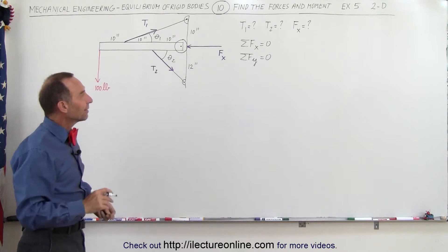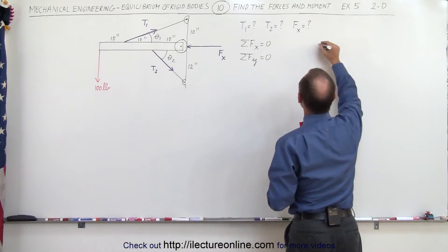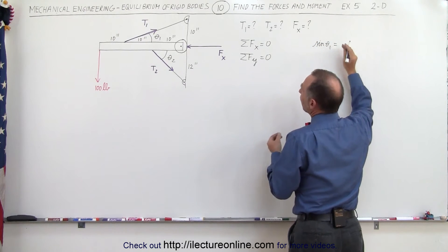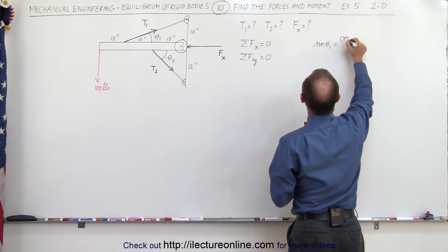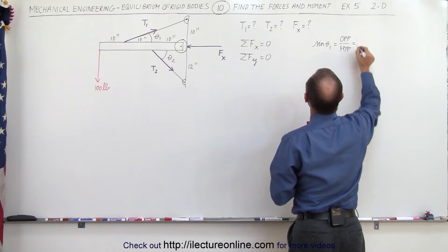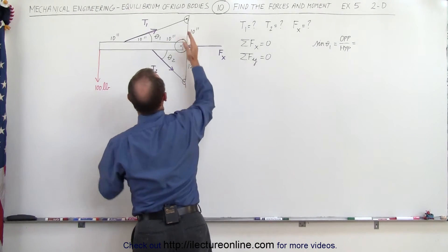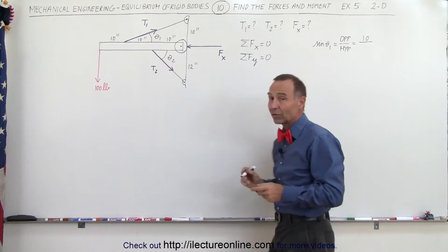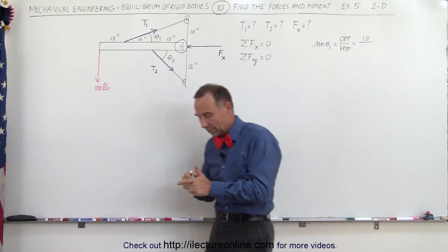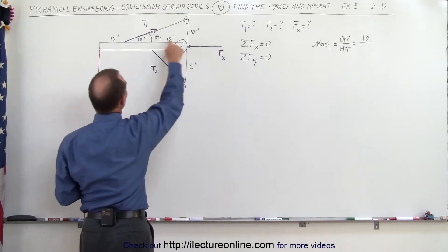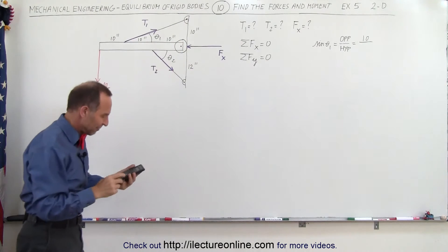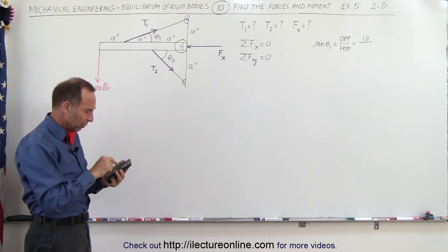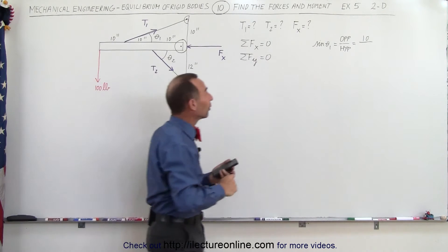The sine of angle theta sub 1 equals the ratio of the opposite side to the hypotenuse. The opposite side here is 10 inches and the hypotenuse is the length of the cable. To find the hypotenuse we use the Pythagorean theorem. We can see that one side is 20 inches and the other is 10 inches, so the hypotenuse is the square root of 10² plus 20², which is the square root of 500, or 22.4 inches.